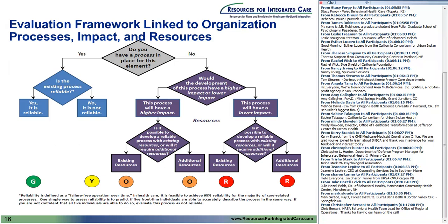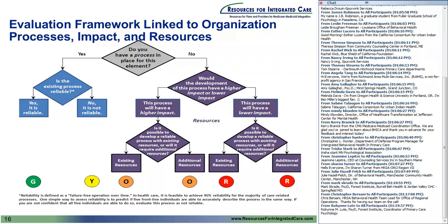The evaluation framework works as follows: for each element, respondents will be asked whether their organization has a certain process in place. If yes, they'll be asked whether the existing process is reliable — meaning you routinely do this. They'll also be asked whether a reliable process is possible given existing resources. If no process exists, they'll be asked whether developing it would have higher or lower impact on the population served. Each element falls into an assessment category of green, yellow, orange, or red based on responses.